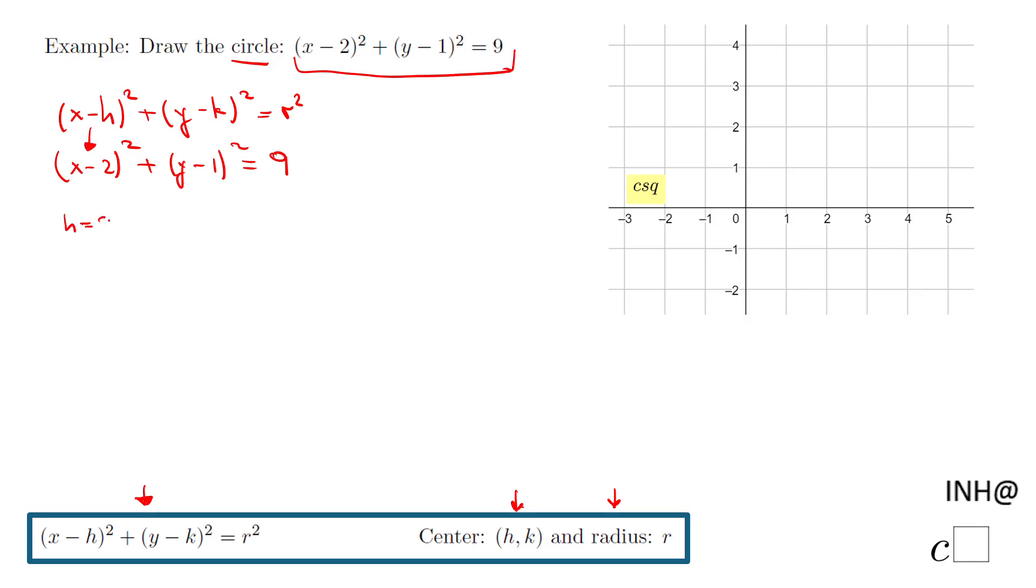Now be careful, we have this minus 2 which is good, otherwise it would be a little bit different. Okay, how much is k? And if in your mind you said 1, that's exactly correct, because we can match these two things.